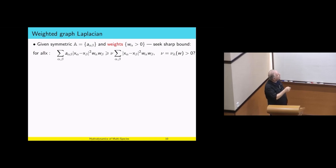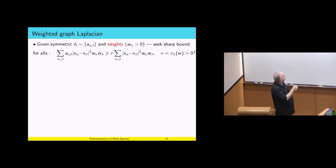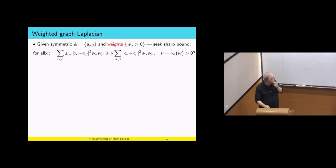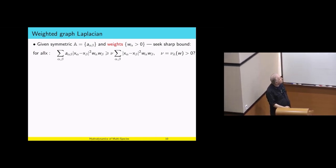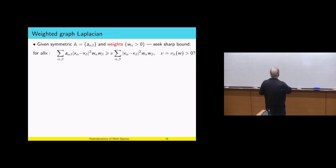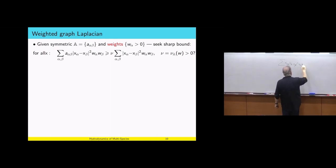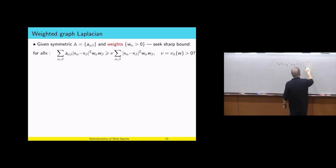Given weight scalars W alpha and W beta, and given a matrix A depending on alpha and beta, the question is: what is the best optimal number nu such that the inequality holds for all X alpha and X beta? The weights are given, the matrix A alpha beta is given. I want to know, when I take this kind of sum with A alpha beta, I get a lower bound — the same quantity but without the A alpha beta. As an example: we get the sum of A alpha beta times (X alpha minus X beta) squared times W alpha W beta, and I'm looking for nu such that I get the sum without A alpha beta.